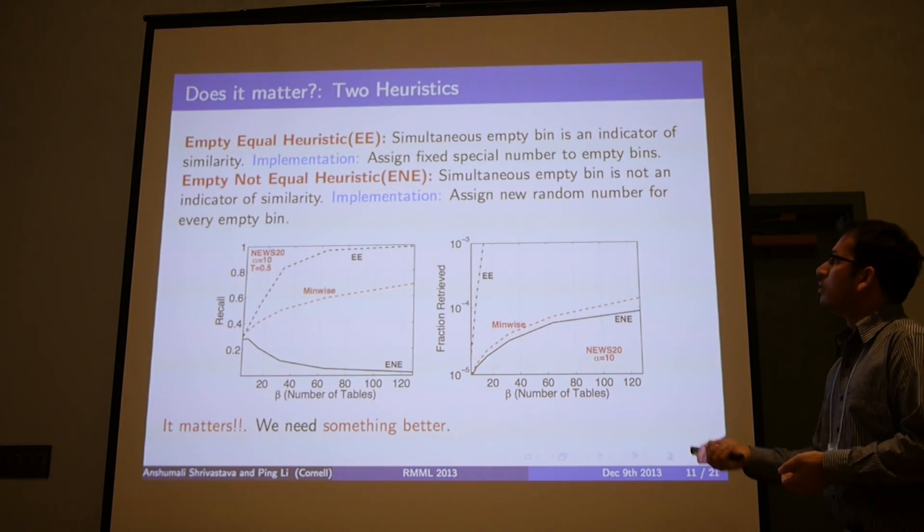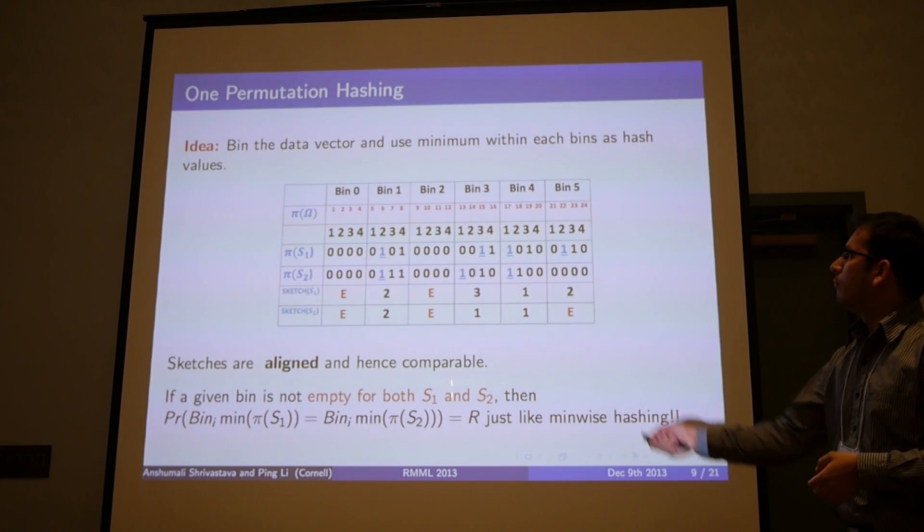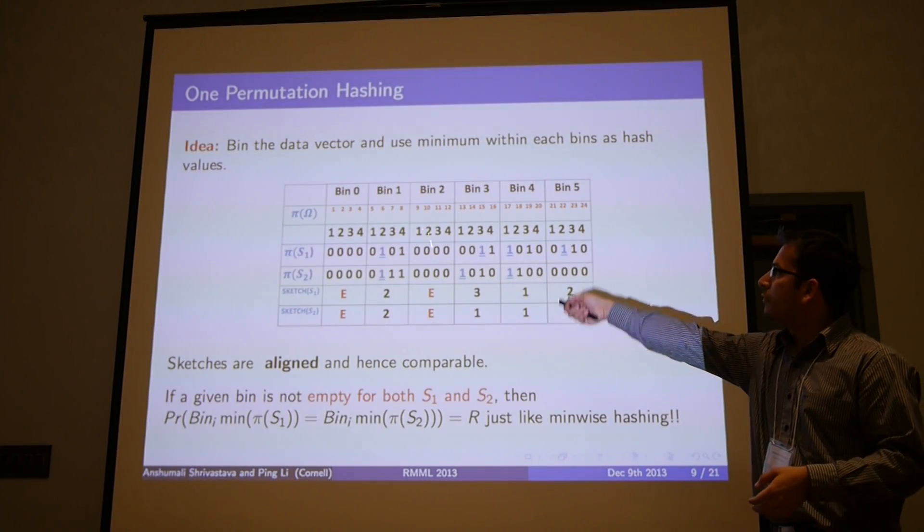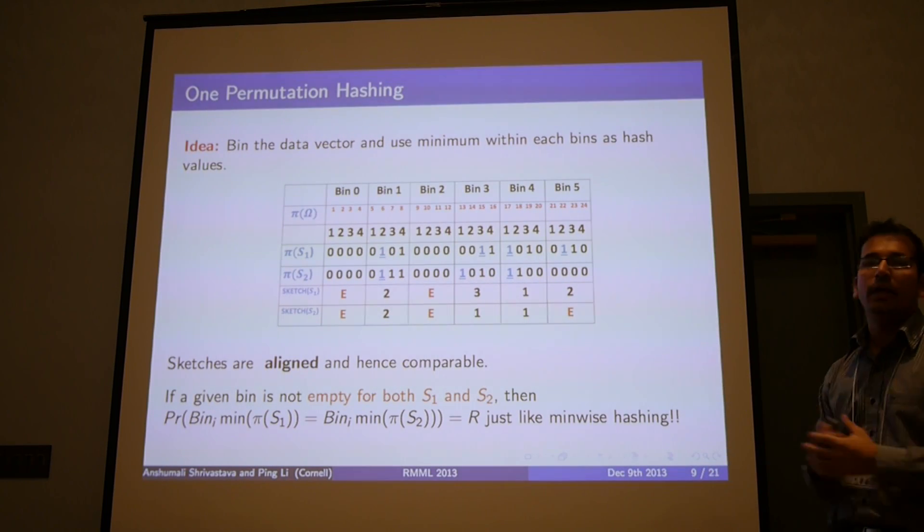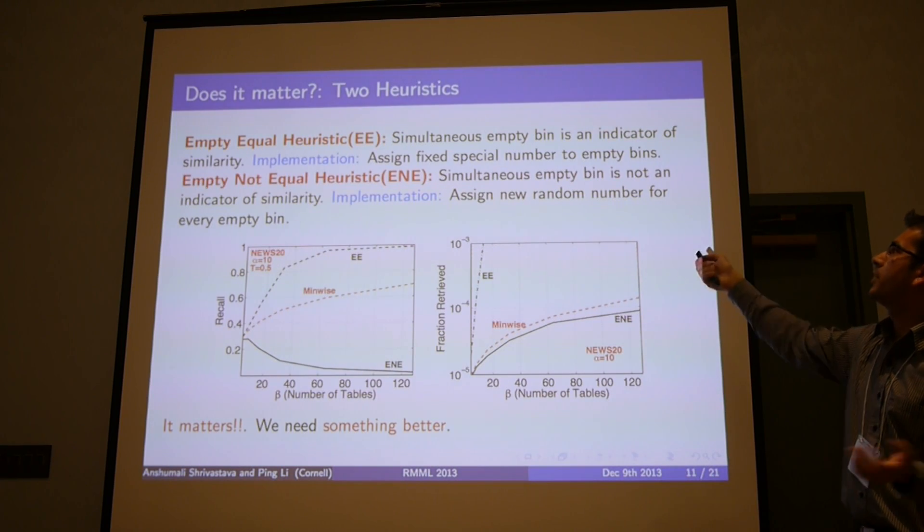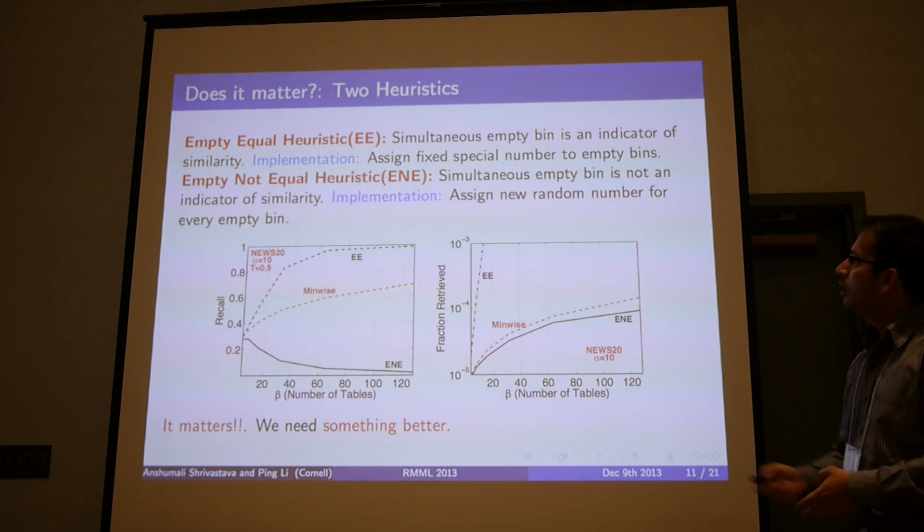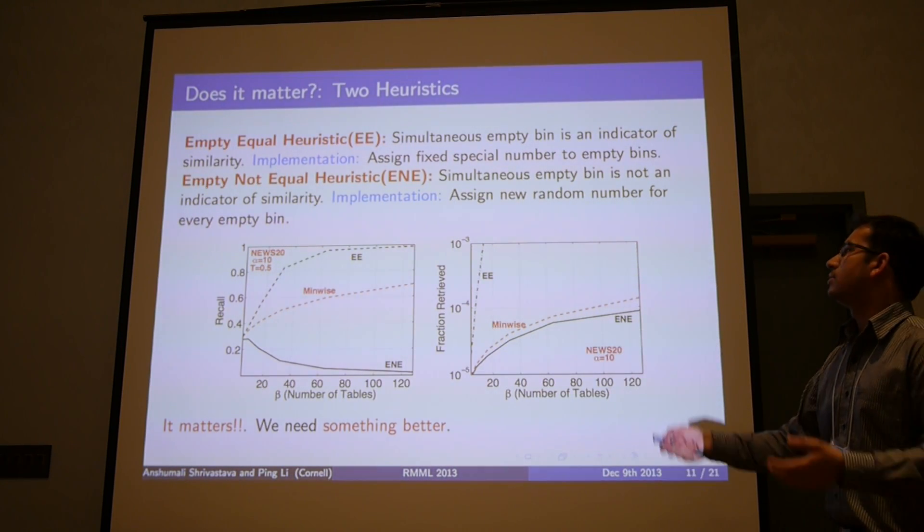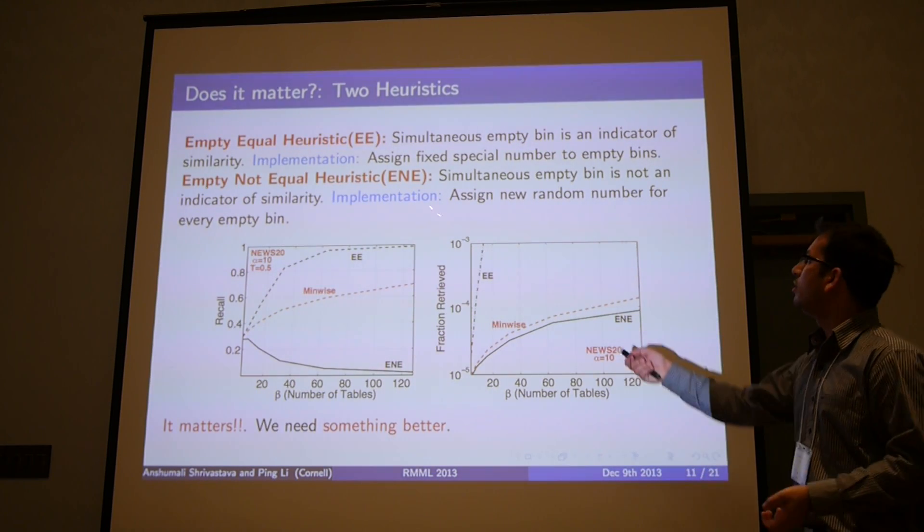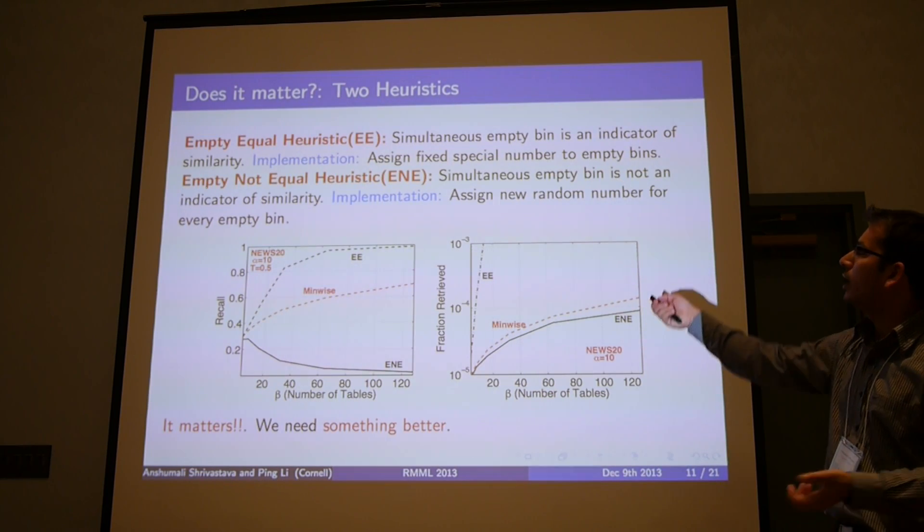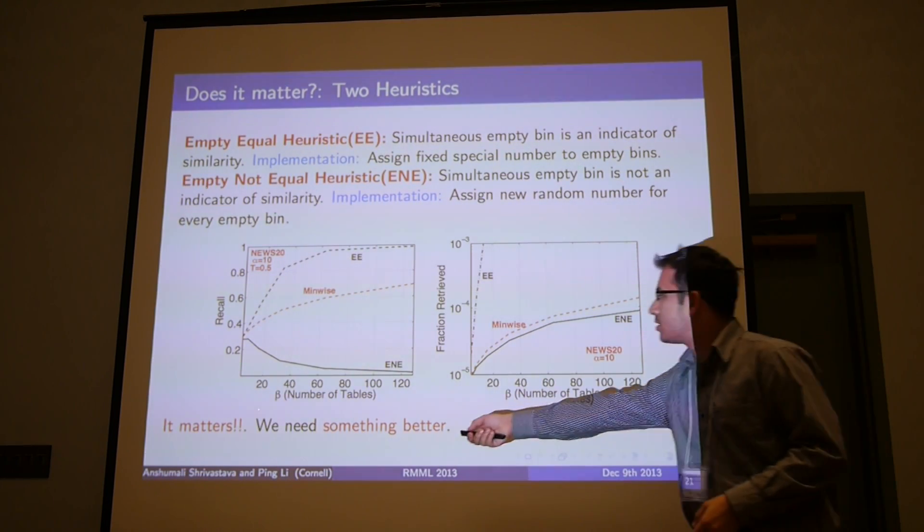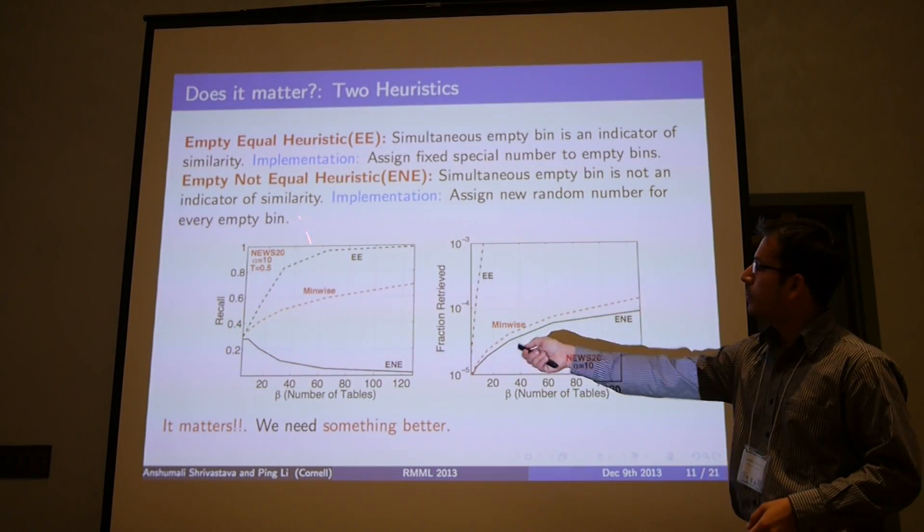Before I go and tell you what the solution is, whether it matters or not. One thing that we can try is, let's say for the timing, even if both of them are empty, it's an indicator of high similarity between them. So that's the empty equal scheme. We can just assign a fixed special number to all the empty bins. Another way is we can say, well, if they are empty, then probably it's not an indicator of similarity, and so we'll assign every time we see an empty bin, we assign a new random number. That's empty not equal.